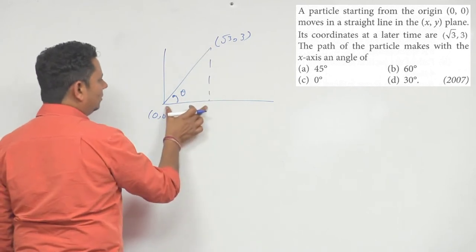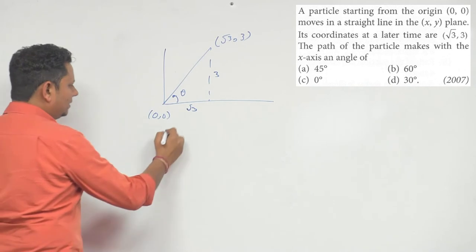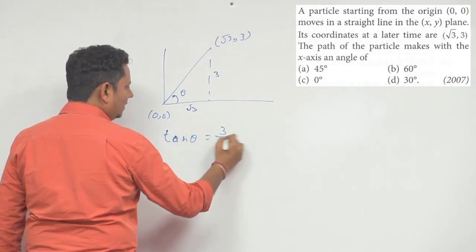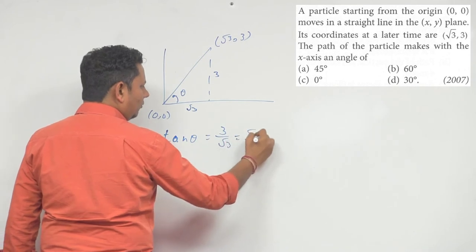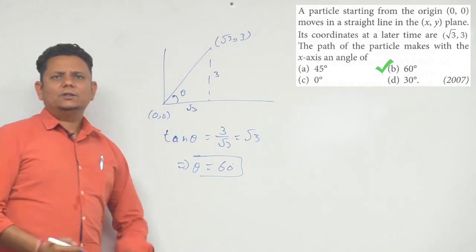The value will be √3, which means tan θ can be written as 3 divided by √3, which will be √3, which implies θ will be equal to 60 degrees. Alright, so based on this